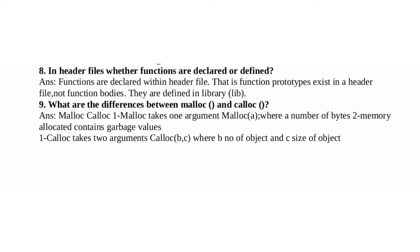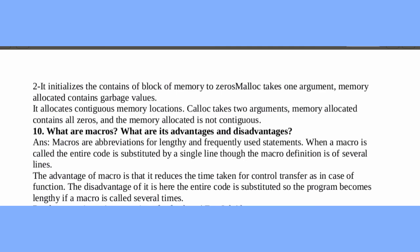Where b is the number of objects and c is the size of object. In calloc, memory allocated contains all zeros. And the memory location is not contiguous. Whereas malloc allocates contiguous memory locations.